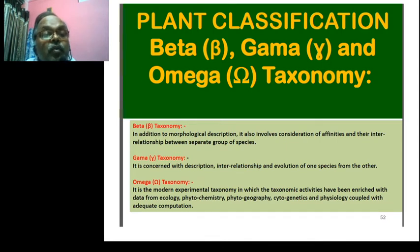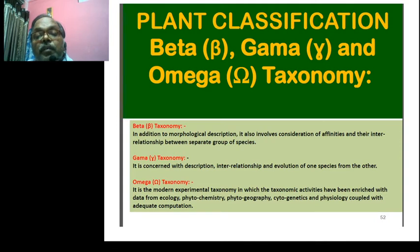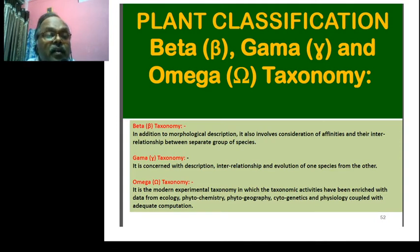The other term is called gamma taxonomy, which covers description and interrelationship, and is called evolution — the modern approach.